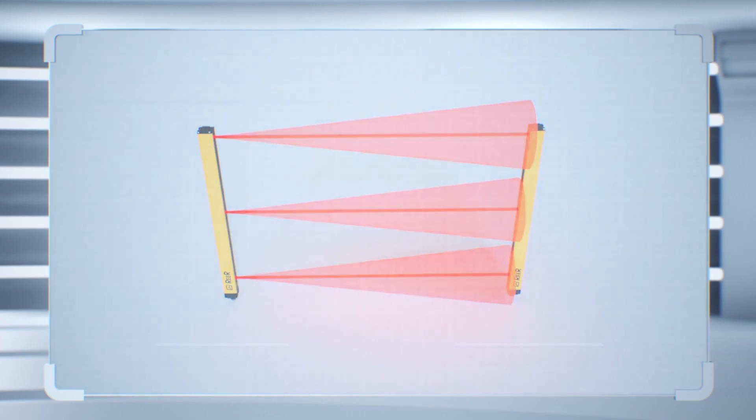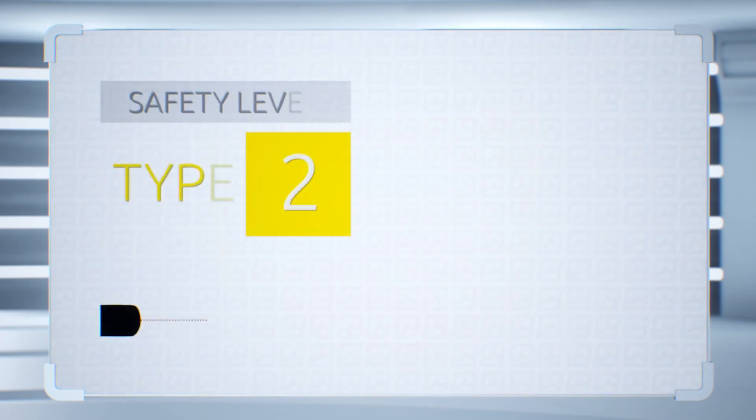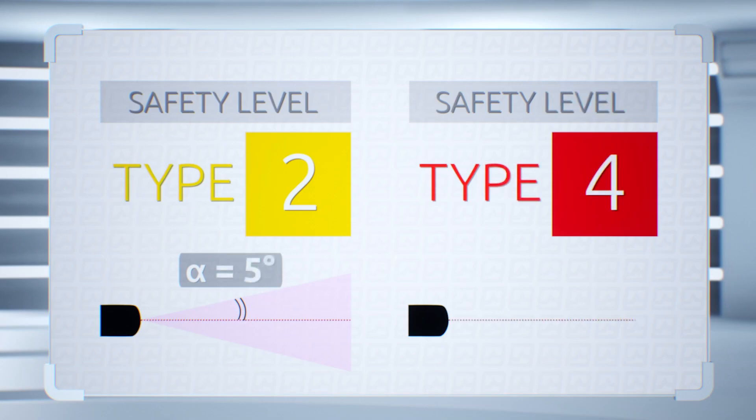Type 2 light curtains have a maximum aperture of 5 degrees, whilst Type 4 light curtains have a maximum aperture of 2.5 degrees.